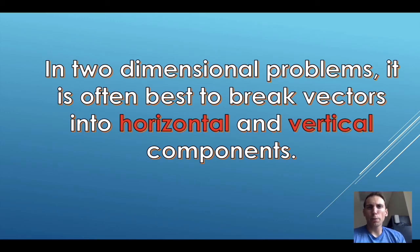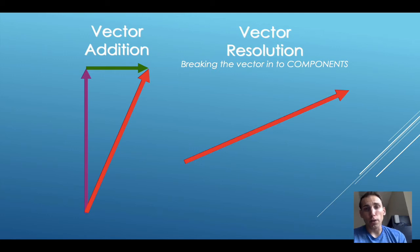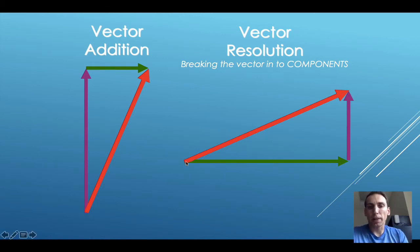But when we have a problem where there is a vector that is not pointed exactly horizontal or exactly vertical, it's kind of diagonal, it's best to break it down into horizontal and vertical components. So vector addition is taking two vectors and looking at the resultant. Vector resolution, or breaking the vector into components, is looking at a diagonal vector and working backwards. Essentially, we're seeing how much horizontal space is this vector taking and separately, how much vertical space this vector is taking.